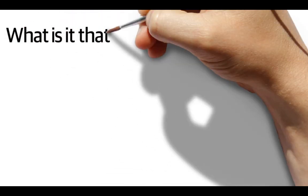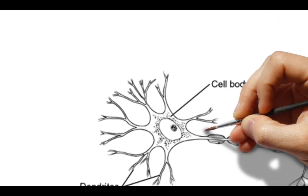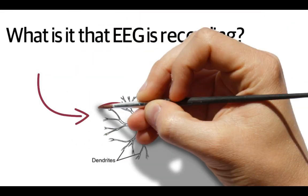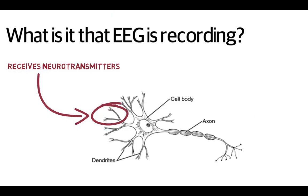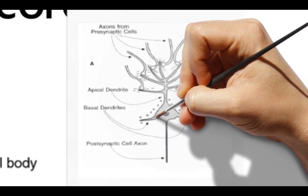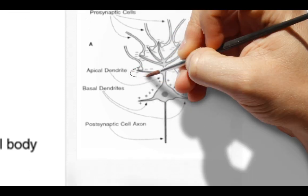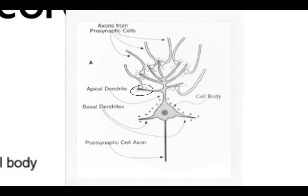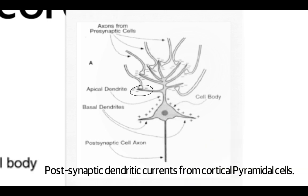What is it that EEG is recording? Your brain is made up of hundreds of billions of brain cells called neurons. The neurons have axons that release neurotransmitters and dendrites that receive them. When the dendrites receive neurotransmitters from the axons of other neurons, it causes an electrical polarity change inside the neuron. This polarity change is what the EEG records — specifically the post-synaptic dendritic currents from the cortical pyramidal cells.